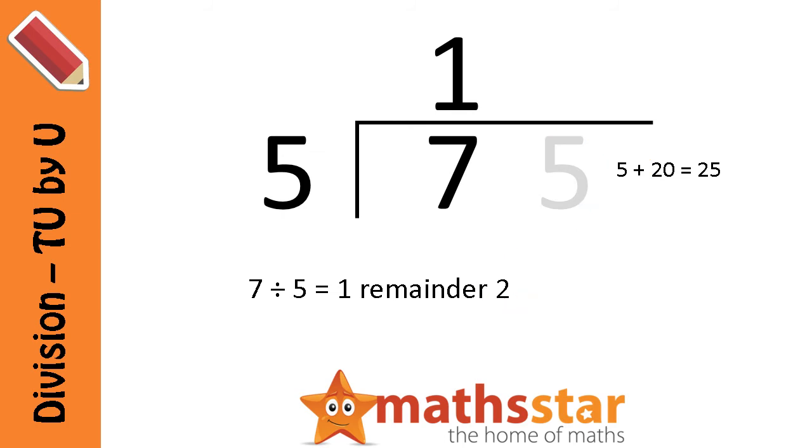The way we show that is to write a little number 2 next to the 5 to show that it's 25. Now that's quite tricky, so we're just going to say that again.